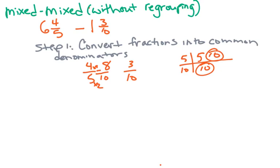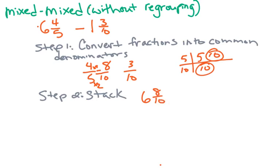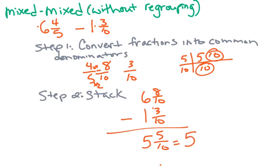Step 2: we're going to stack. Our whole number is 6, and the 4 fifths is now 8 tenths, minus — up here we have the 1 whole and our 3 tenths didn't need to change. Now we can subtract: 8 tenths minus 3 tenths is 5 tenths. 6 minus 1 is 5. And of course we simplify, so we get 5 and 1 half. Remember to pause and catch up.